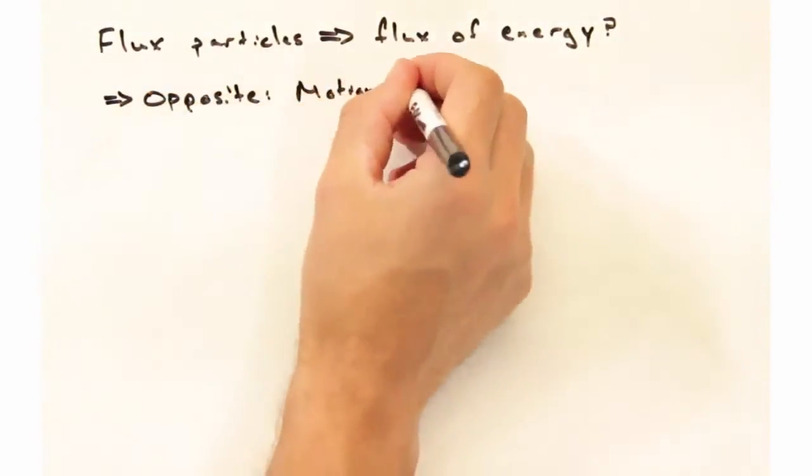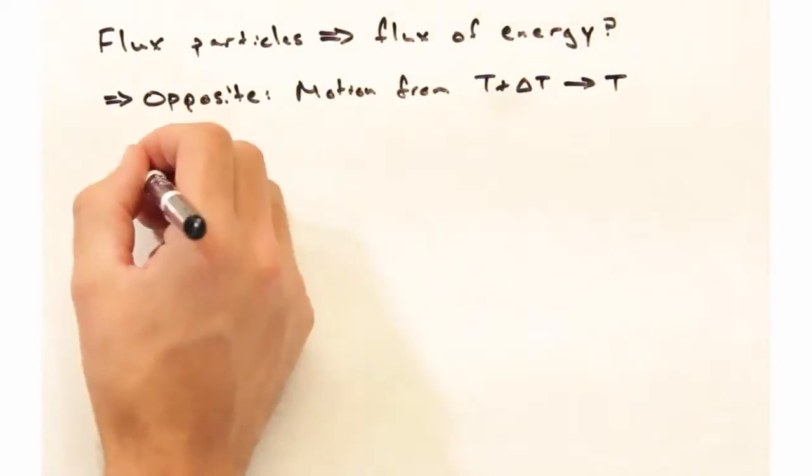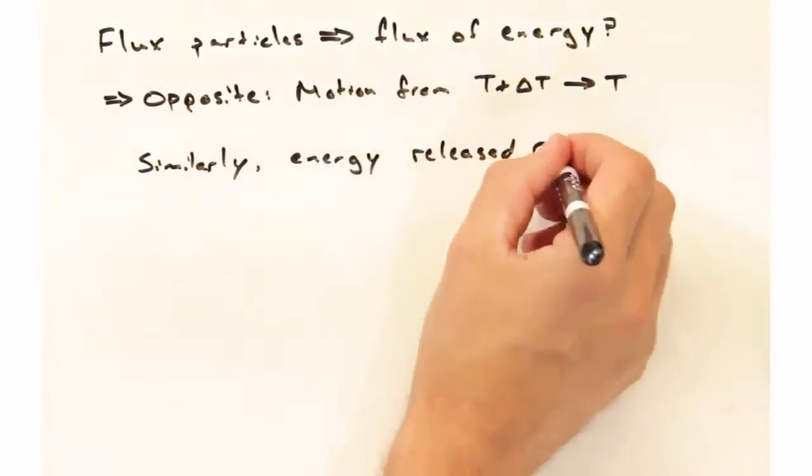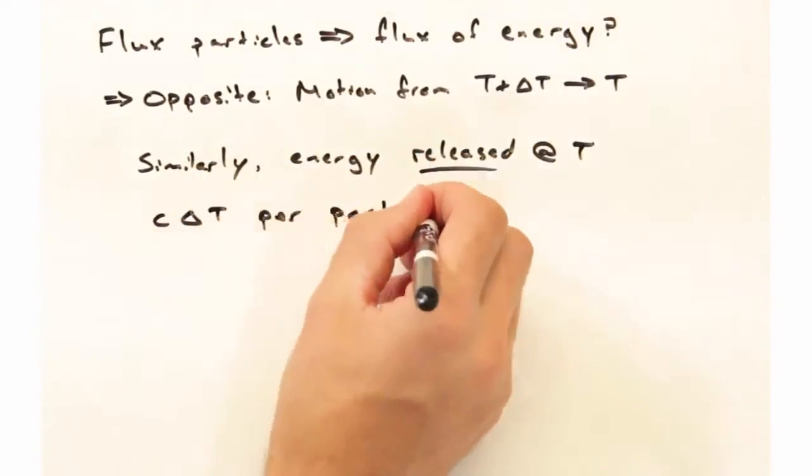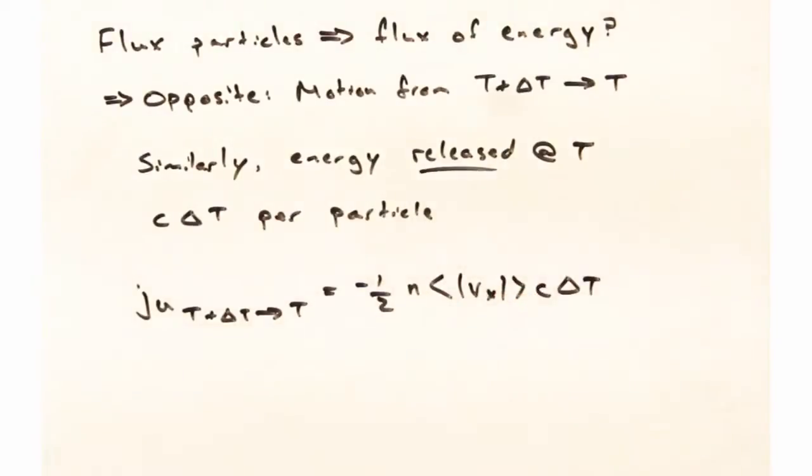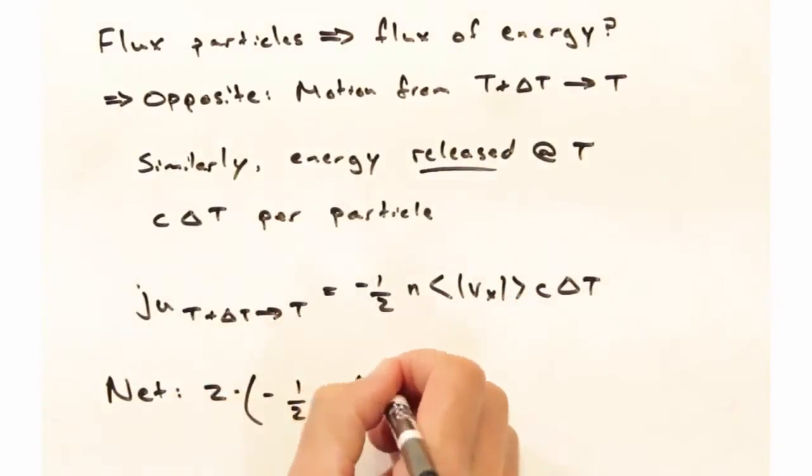And for particle motion in the opposite direction, where a particle is at t plus delta t, and it's going over into the colder t region, we're likewise going to find that energy is going to be released, and that amount of energy released is c delta t. So, we can again write this same expression, and together we get this net expression at the bottom.